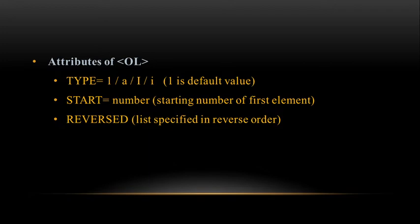Now we see the attributes of the OL tag. There are three attributes: type, start, and reversed. The type attribute has four values: 1, A, roman uppercase, and roman lowercase. The default value is 1, meaning when we don't write the type attribute, the list displays as 1, 2, 3, 4. The start attribute takes any number representing the starting number of the first element. The reversed attribute displays the list in reversed order.